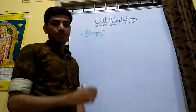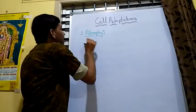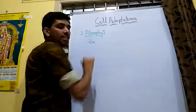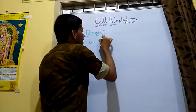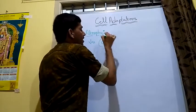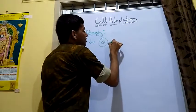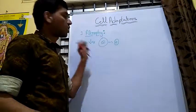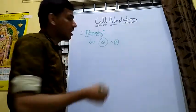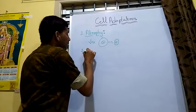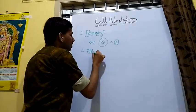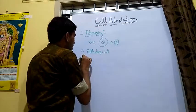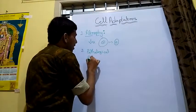Atrophy means the decrease in size of a cell. The size of a cell that is normal leads to a decrease in size of a cell. This is called atrophy. In atrophy, there are two types: pathological atrophy and physiological atrophy.